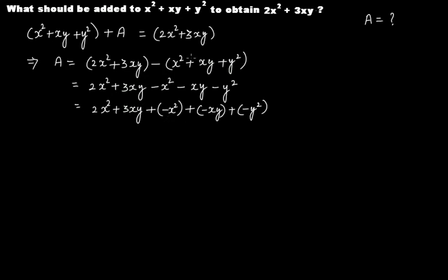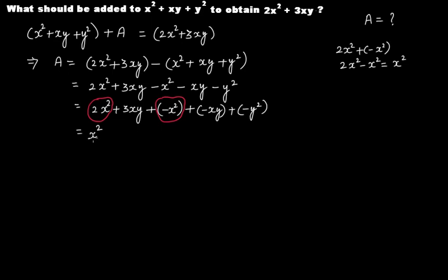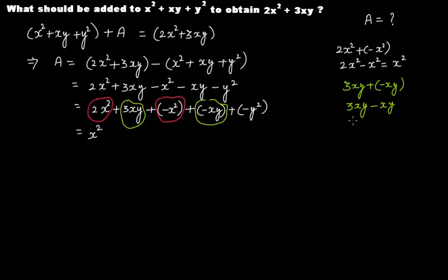Looking at this expression, 2x squared and minus x squared are like terms: 2x squared minus x squared gives x squared. Then 3xy and minus xy are like terms: 3xy minus xy gives 2xy.